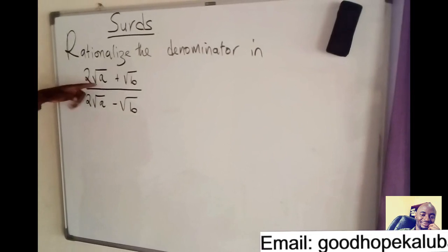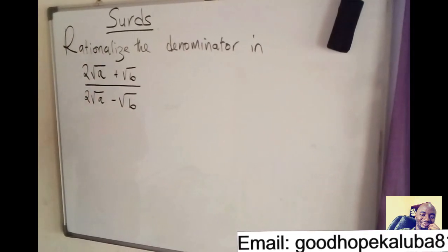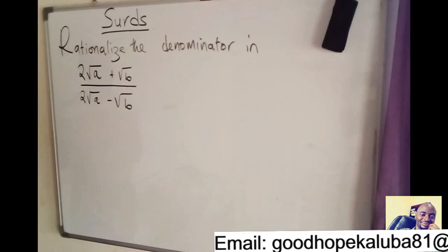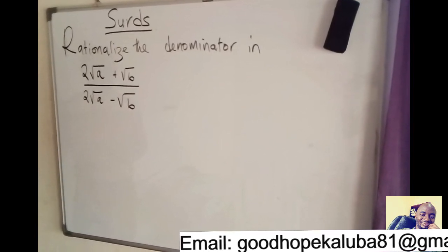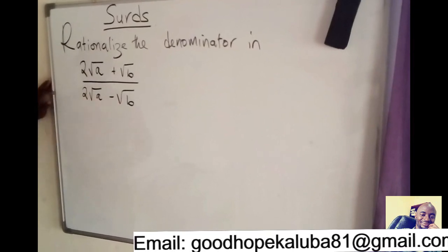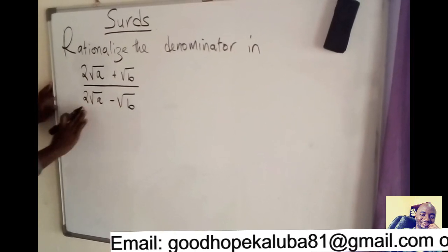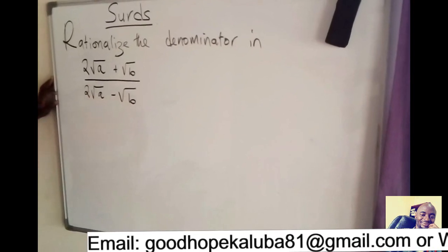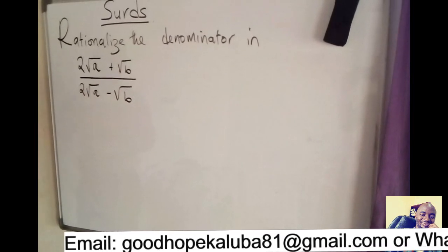you may end up with square root, cube root, all those things are called surds or radicals. So when we say rationalize, we are telling you to remove the square root from the denominator. So for you to remove the square root from the denominator, we are going to use the concept of rationalization.